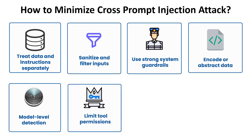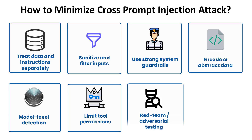Sixth, limit tool permissions: require human approval for sensitive operations triggered by the agent, and adopt least privilege access for any tools the LLM can invoke. Seventh, red team adversarial testing: test your system with various malicious prompts during development, and identify weaknesses to improve defenses against prompt injection attacks.